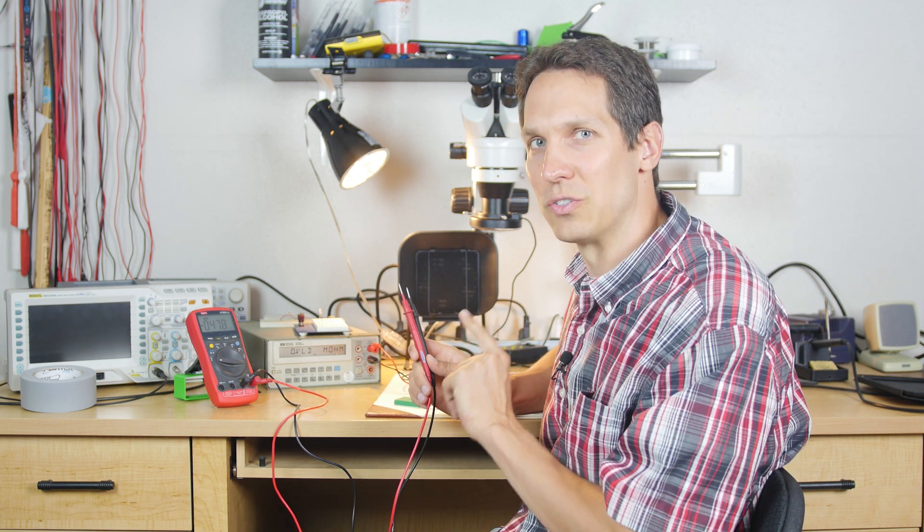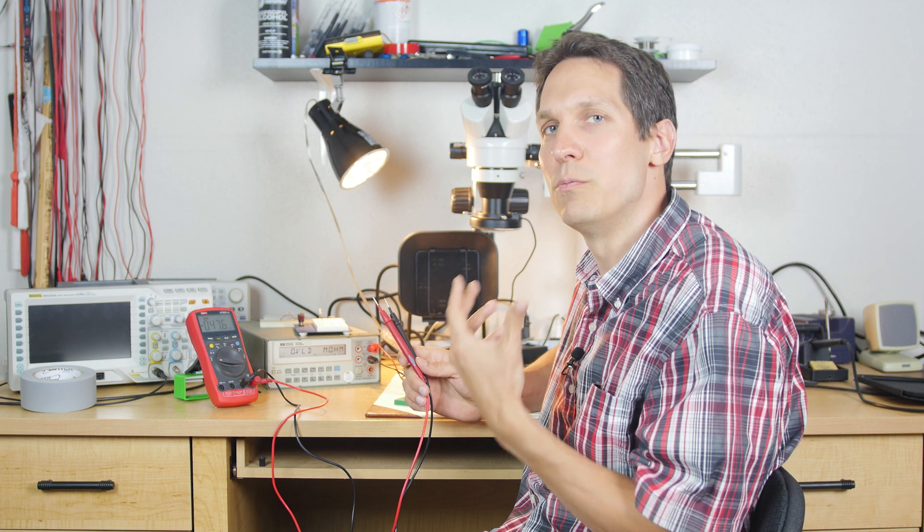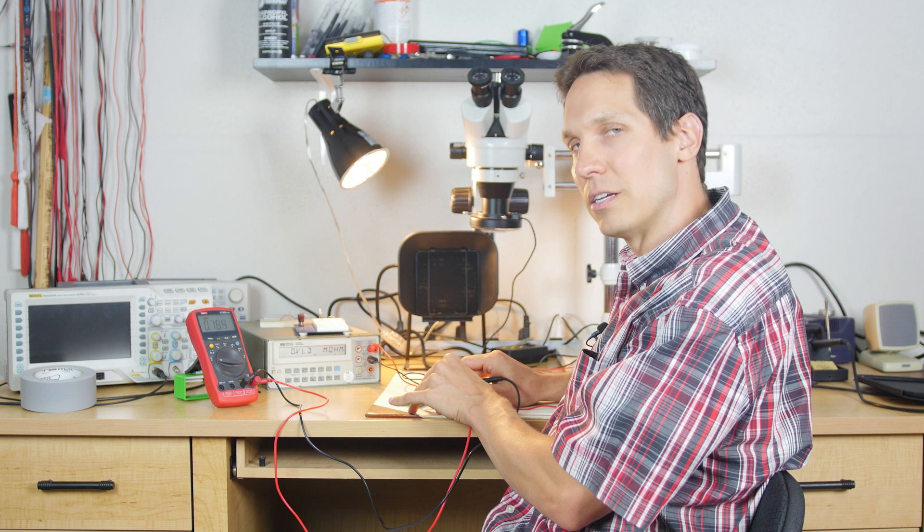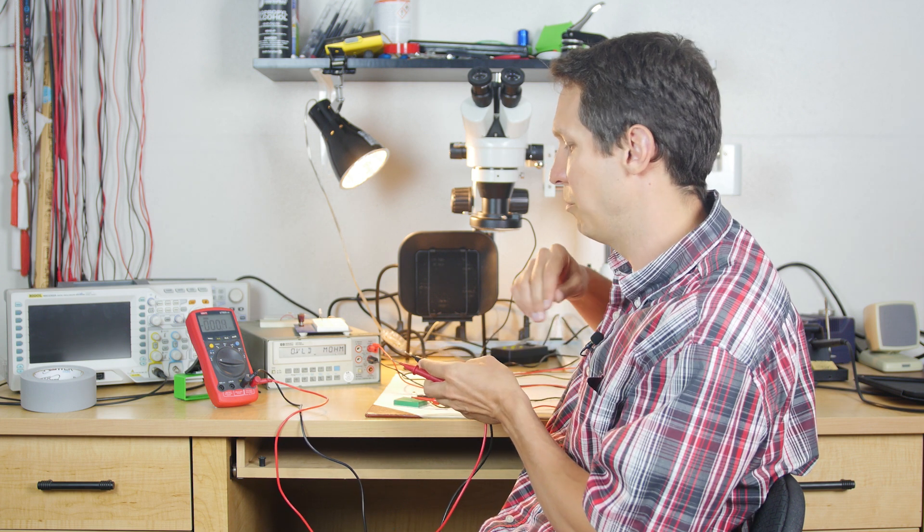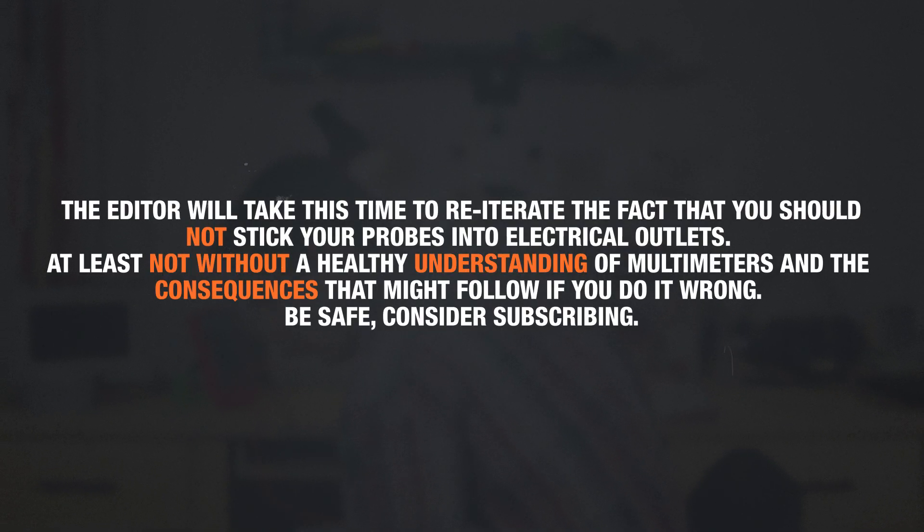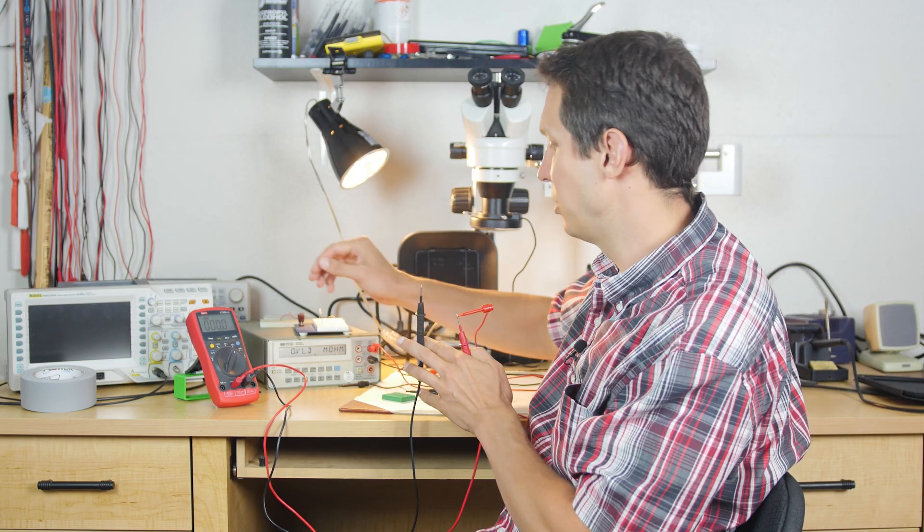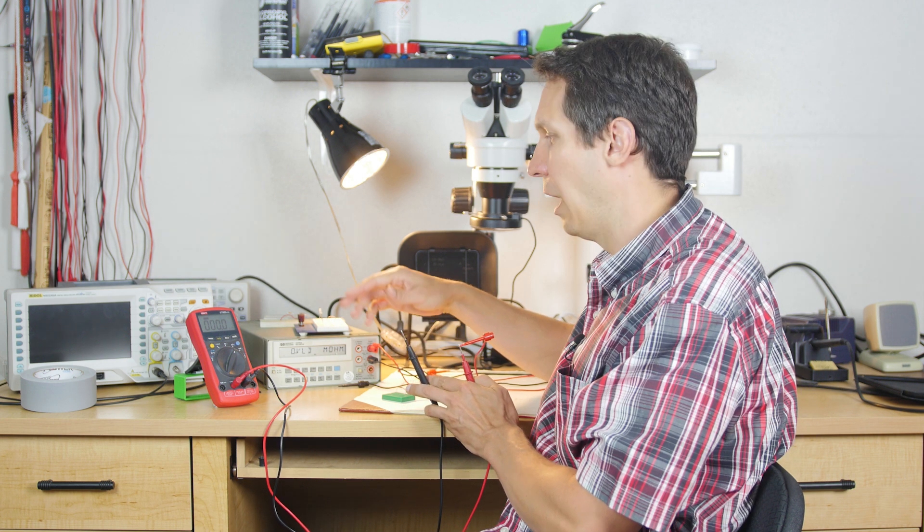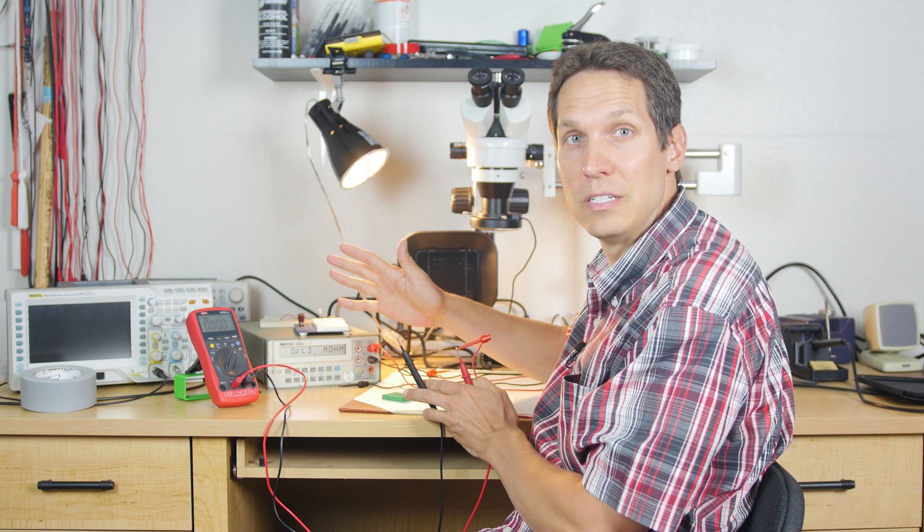So I'm actually going to change this really quick and show you how we would measure current. Right now as you saw I measured the voltage across the resistor, and now we are going to figure out how to measure the current through the resistor. Knowing that I'm giving it 6 volts and that this is a 100 kilo ohm resistor, I was anticipating it to be about 60 micro amps.